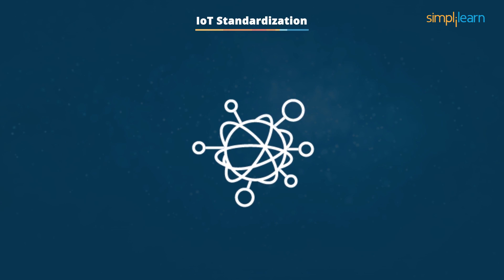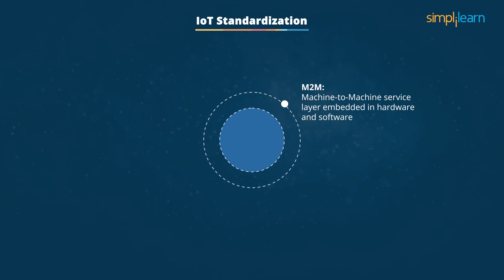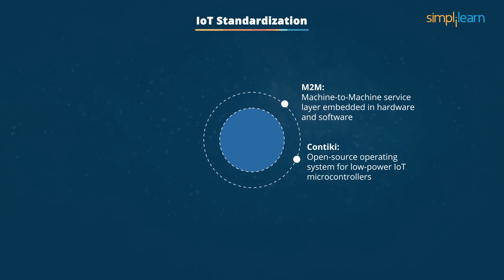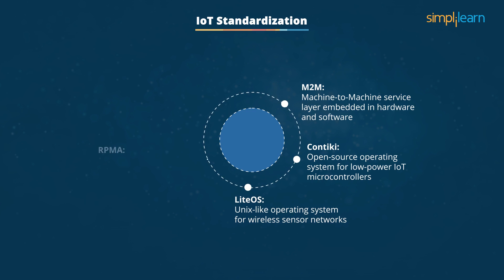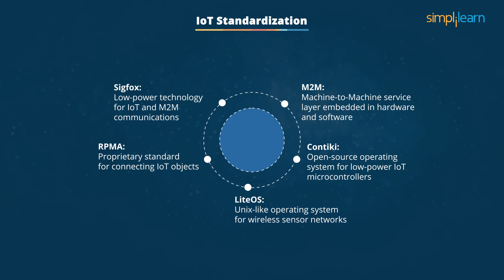IoT Standardization and Design Considerations. There are a number of IoT standards, and these are evolving over time. Key ones include M2M, a machine-to-machine service layer that can be embedded in hardware and software to connect devices; Contiki, an open-source operating system for low-cost, low-power IoT microcontrollers; and LightOS, a Unix-like operating system for wireless sensor networks. Random Phase Multiple Access is a proprietary standard for connecting IoT objects.